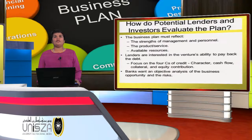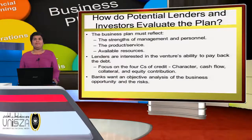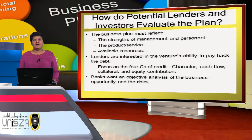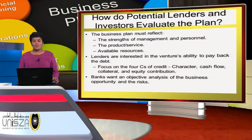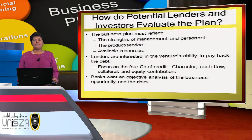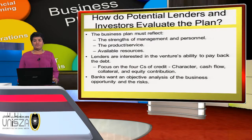How do potential lenders and investors evaluate the plan? The business plan must reflect the strength of management and personnel, the product or service, and available resources. Lenders are interested in the venture's ability to pay back debt, so they focus on the four C's of credit: character of the entrepreneurship, cash flow of the company, collateral, and equity contribution. Banks want an objective analysis of the business opportunity as well as the risk.